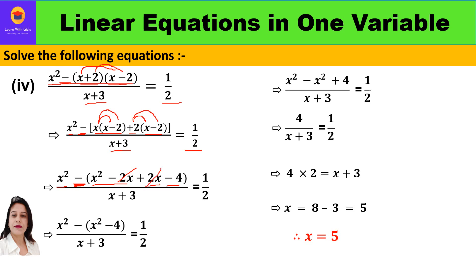Minus 2x and plus 2x cancel again. So we have x² minus, in bracket, (x² minus 4), upon (x plus 3) equal to 1/2. The bracket must be there with the minus sign outside. Now we open the bracket and change the signs: x² minus x² plus 4.